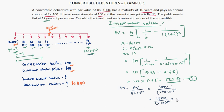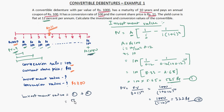Upon calculation this comes to rupees 322. So the investment value equals part 1 plus part 2, that is 565 plus 322, which equals rupees 887. So the investment value is rupees 887.